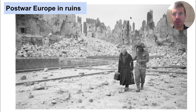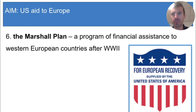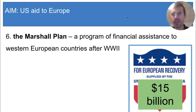In order to help rebuild Western Europe and to help spread capitalism, the U.S. government created something called the Marshall Plan. This was named after the U.S. Secretary of State, Mr. Marshall. The Marshall Plan was a program of financial assistance to Western Europe after World War II. Basically, the U.S. gave Europe a ton of money — it was over 15 billion dollars.